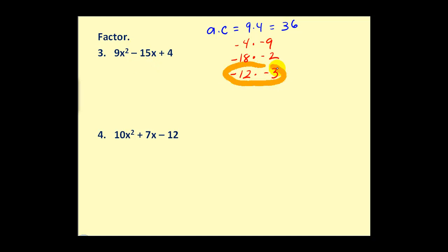What we do is we use these two factors to rewrite the middle term. So that means we write 9x² minus 12x minus 3x, which is still minus 15x, plus 4. But now we factor this by grouping. We're going to cut it in half.